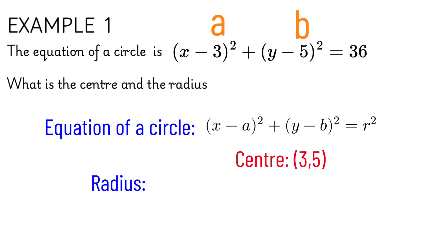And for the radius, R squared is equal to 36 which means R is equal to the square root of 36 which is equal to 6.